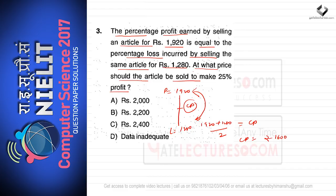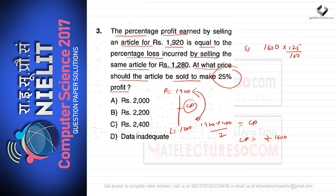Now we have to find at what price the article should be sold to make a 25% profit. The CP is rupees 1600. Multiplying by 125/100 gives the selling price equal to rupees 2000. So option A is the correct option for this question.